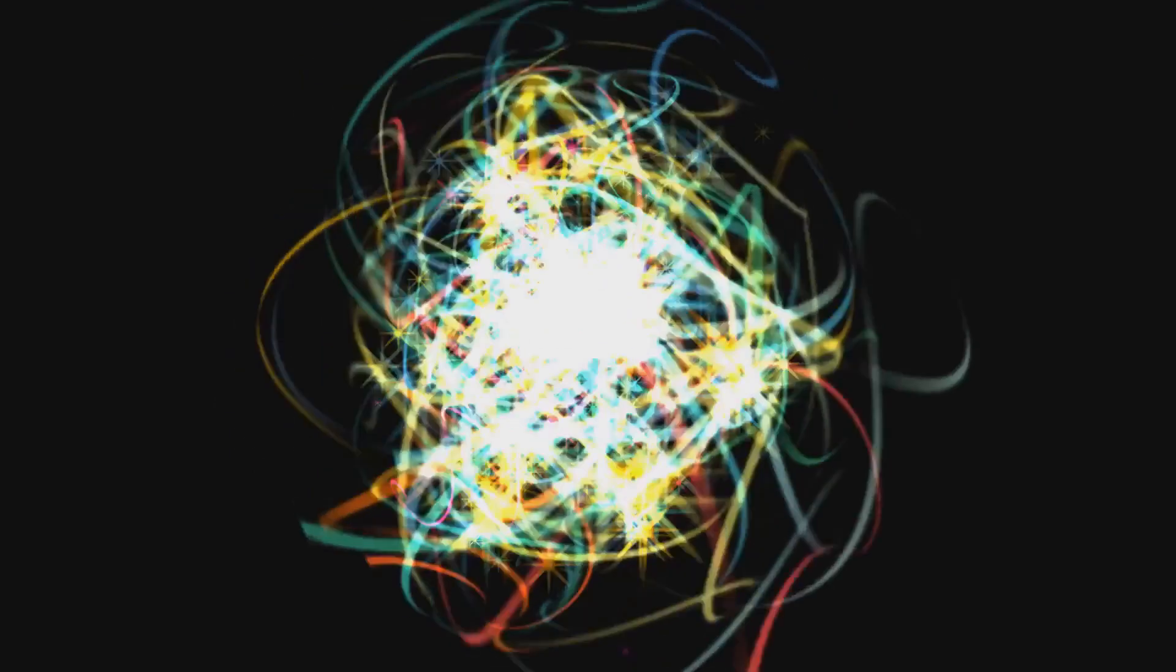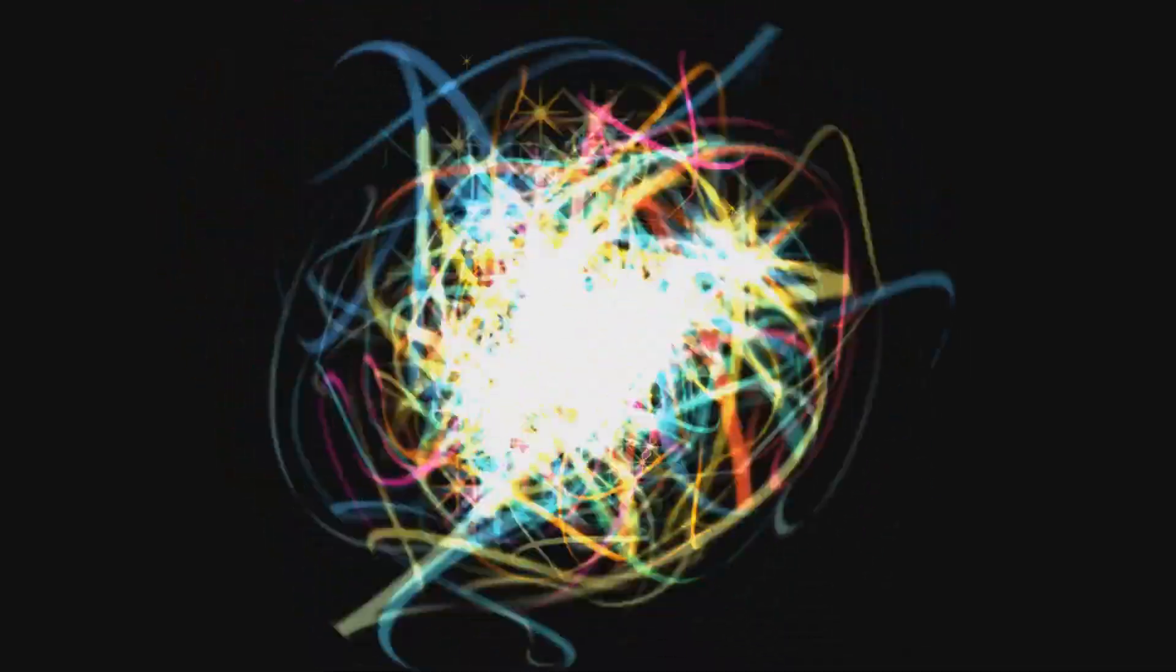The challenge of fleeting existence. The S matrix describes particle interactions, but struggles with the early universe's fleeting high-energy particles. In the nascent cosmos, particles constantly collided and transformed, creating transient states.